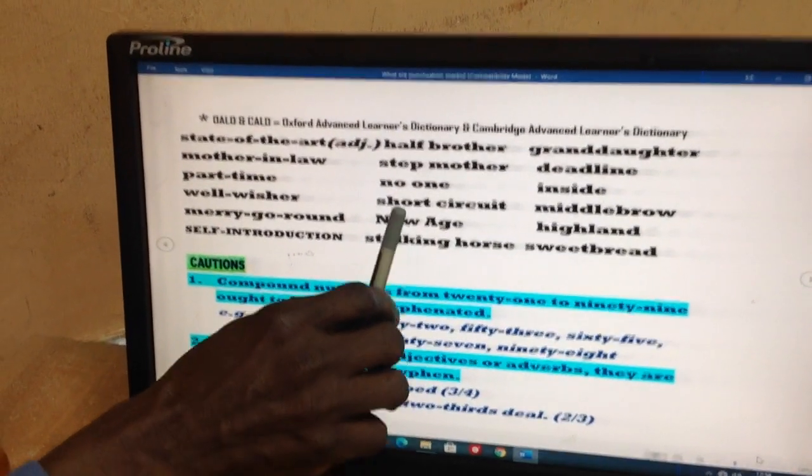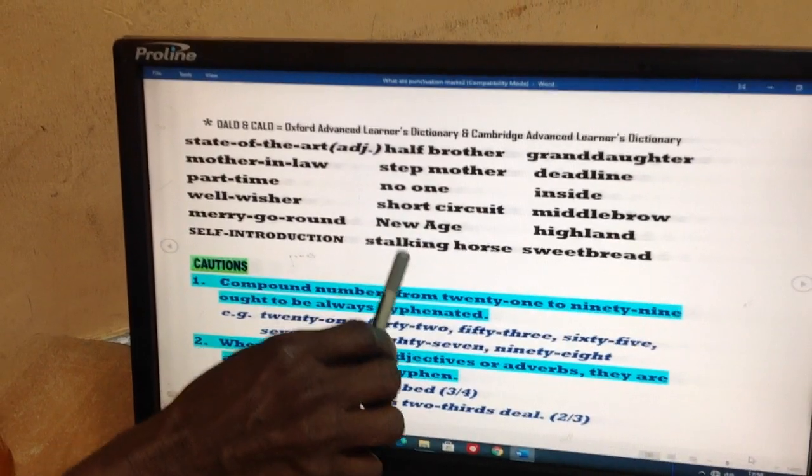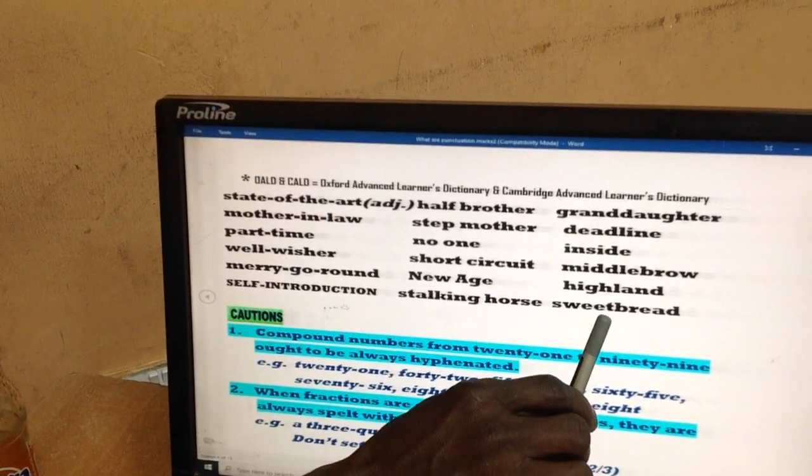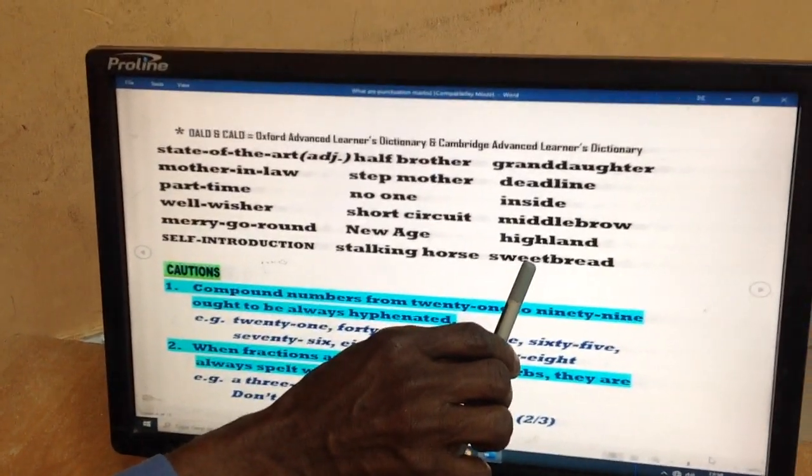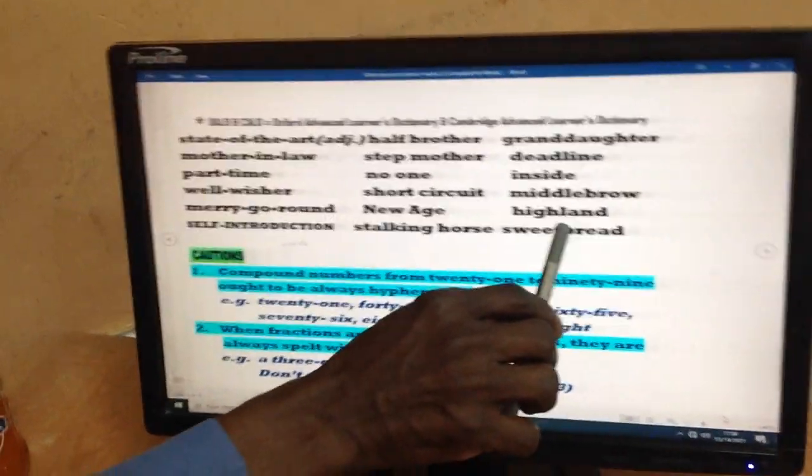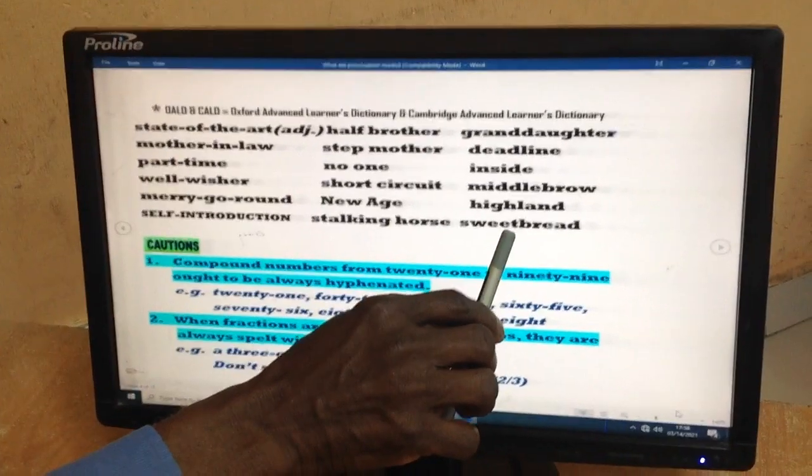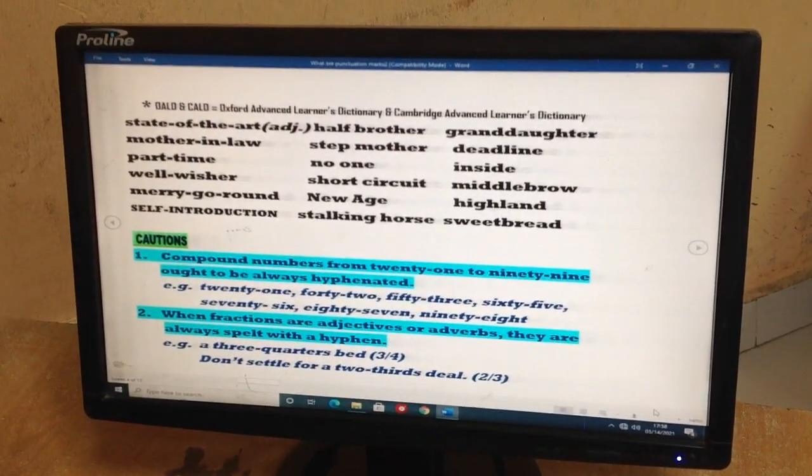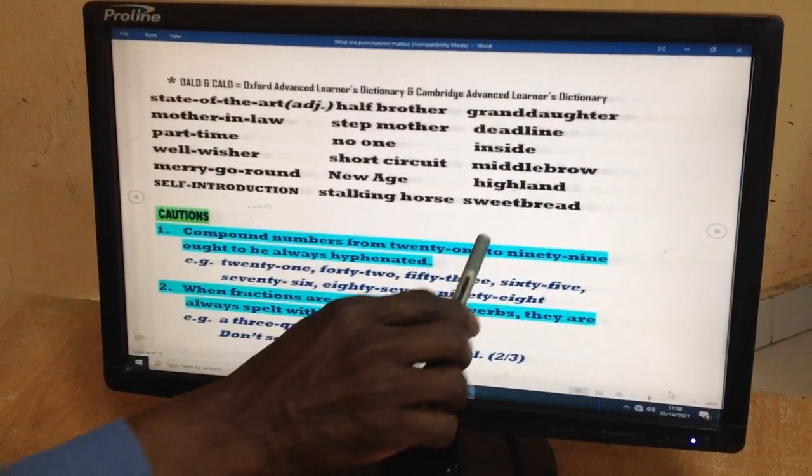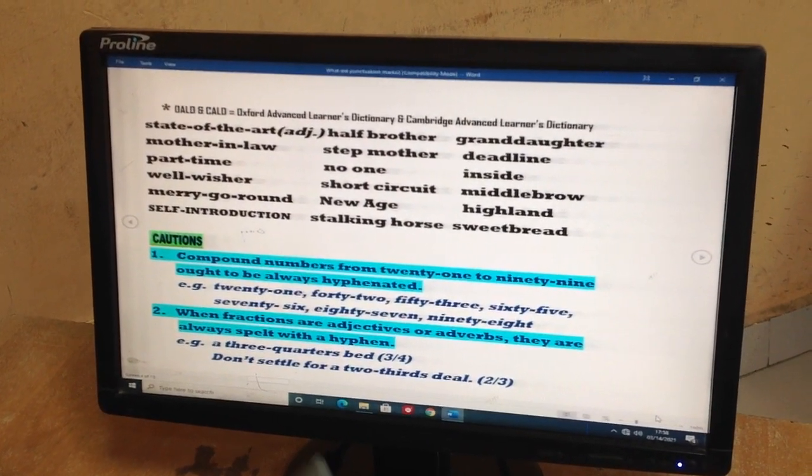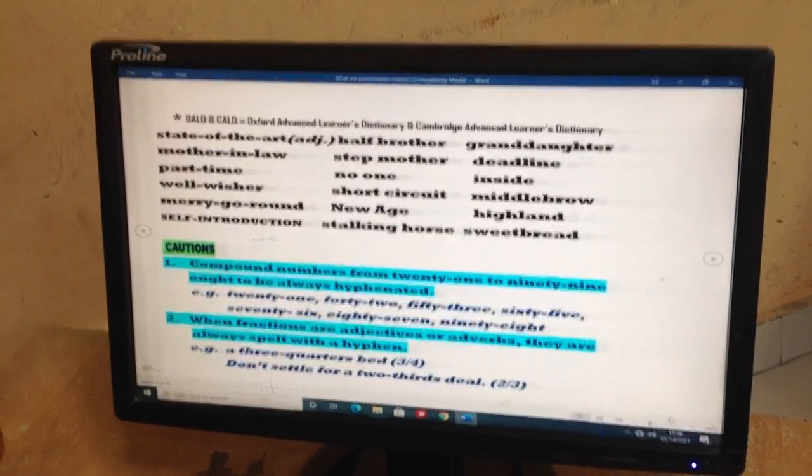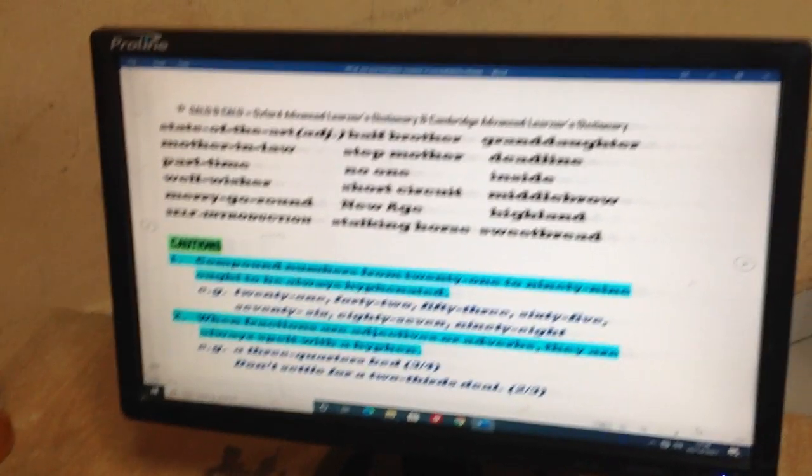New age, open compound. No one, always open compound. A stocking house, always open compound. Sweet bread, there is nothing like bread here or sweetness. This is the pancreas of a sheep used as food. This sweet bread is always written as a solid compound if you refer to the meat, the pancreas of a sheep. If you write it as an open compound, if you write sweet gap bread, it would mean the bread has got a sugary taste. So we must make the difference in meaning very clear to the readers.